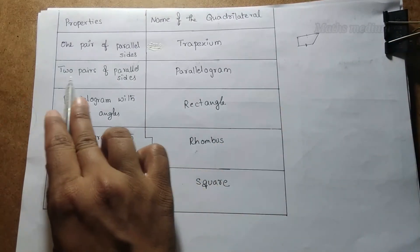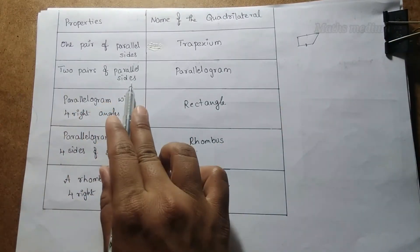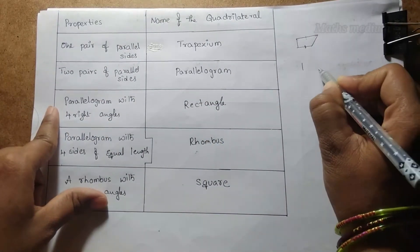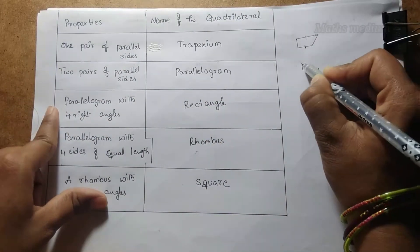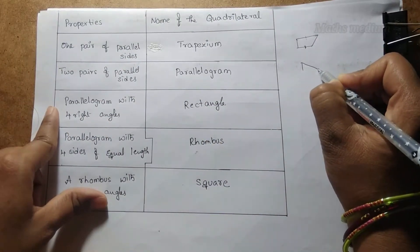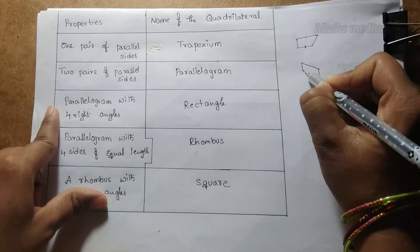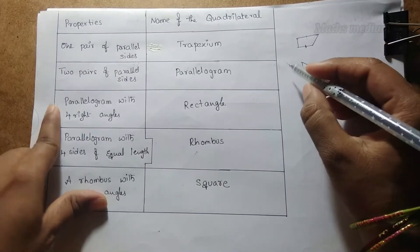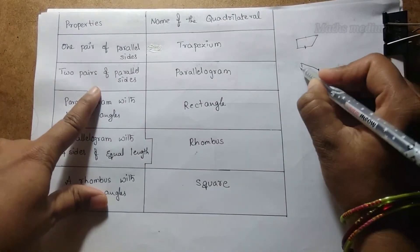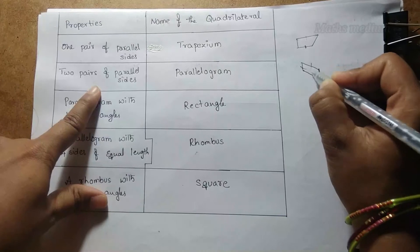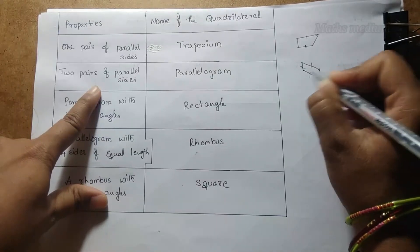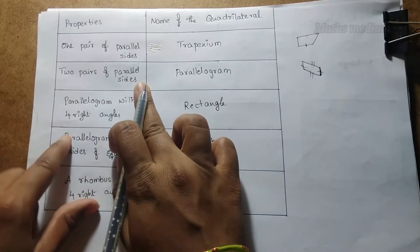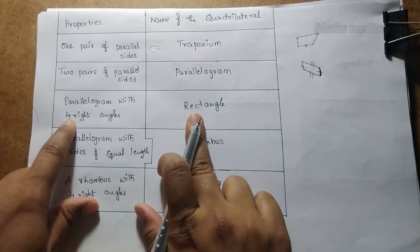These are the properties of quadrilaterals. Trapezium has one pair of parallel sides. Next, coming to parallelogram, which has two pairs of parallel sides, and the opposite sides are equal — one pair and another pair.